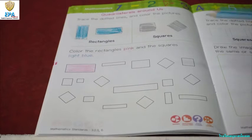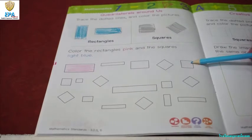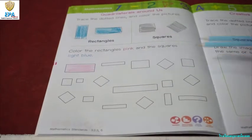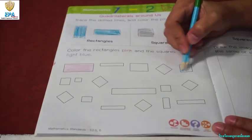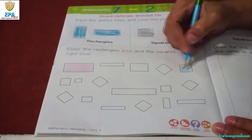And how about this one? So, what shape is this? Square. Very good! So, we are going to color the square light blue.